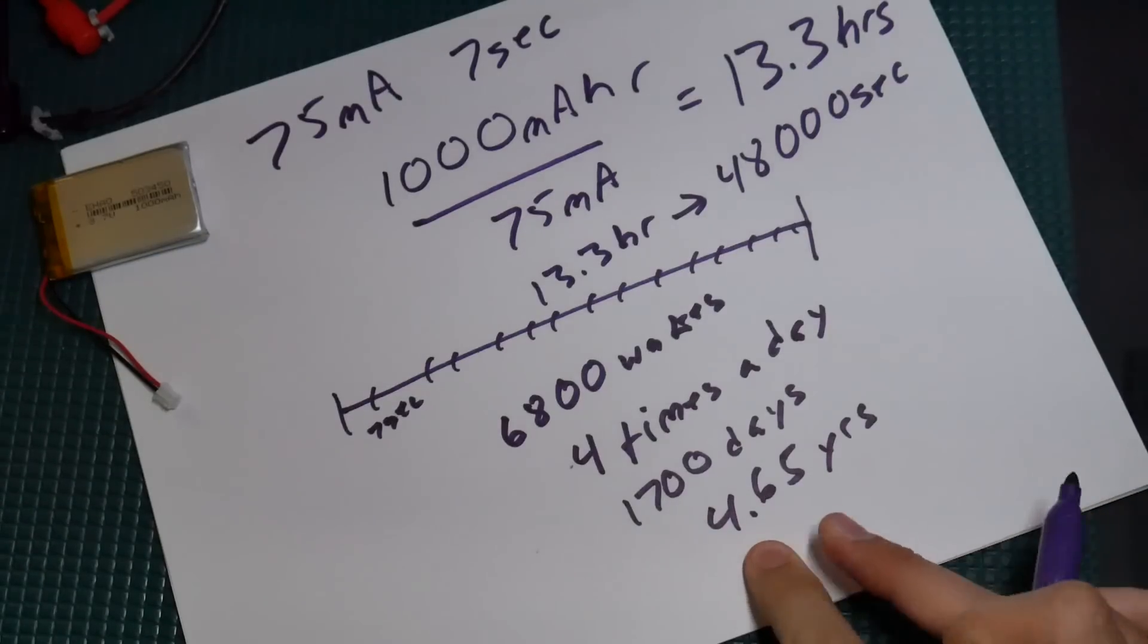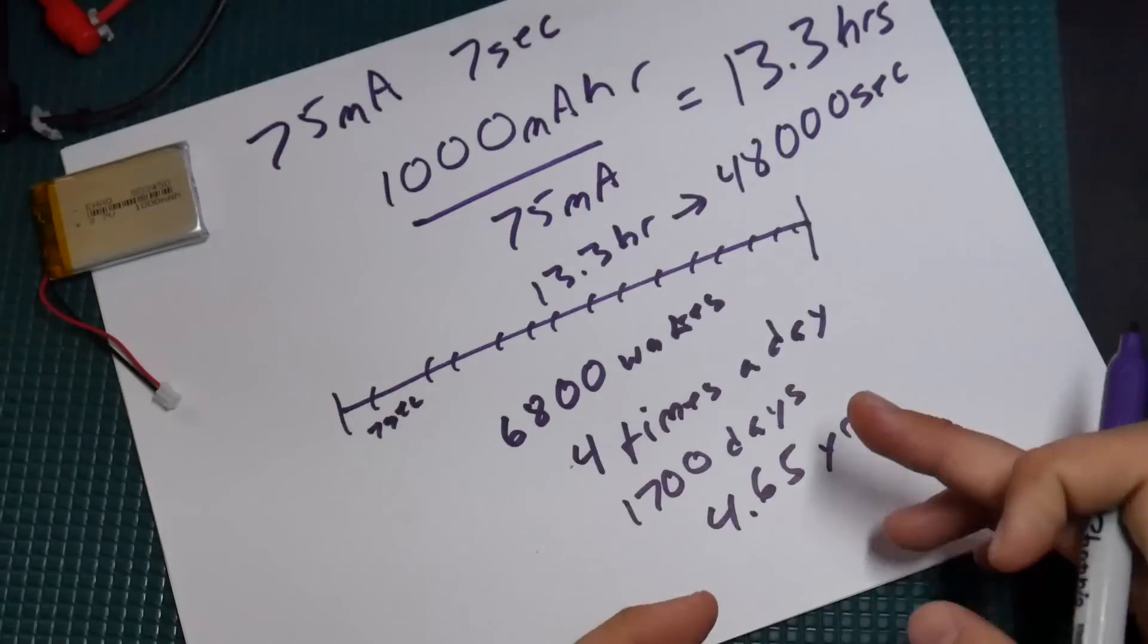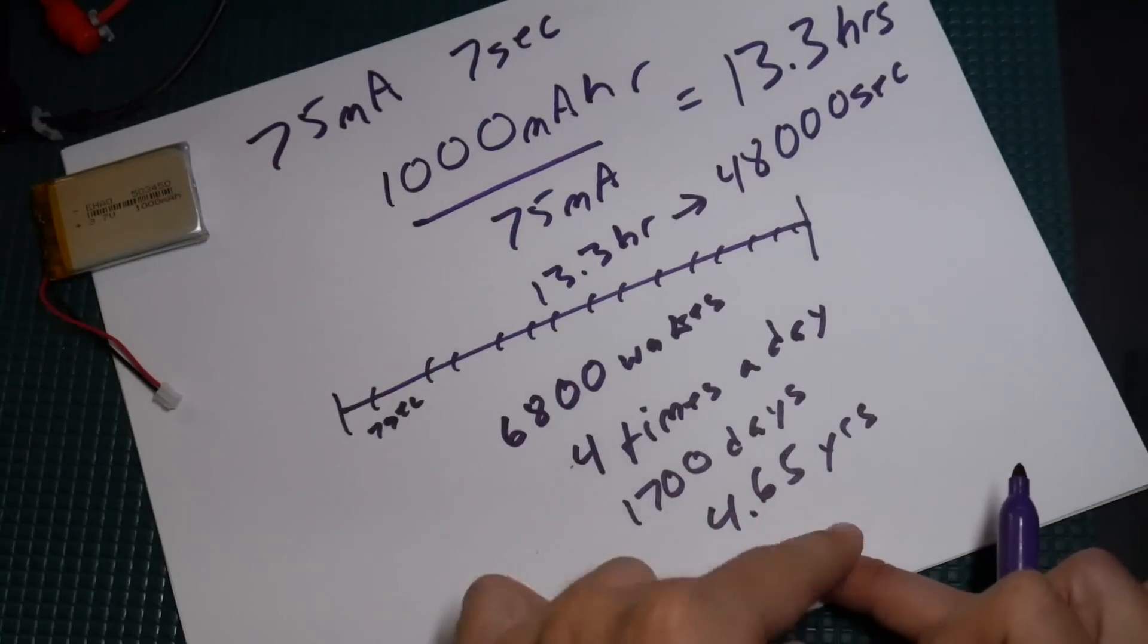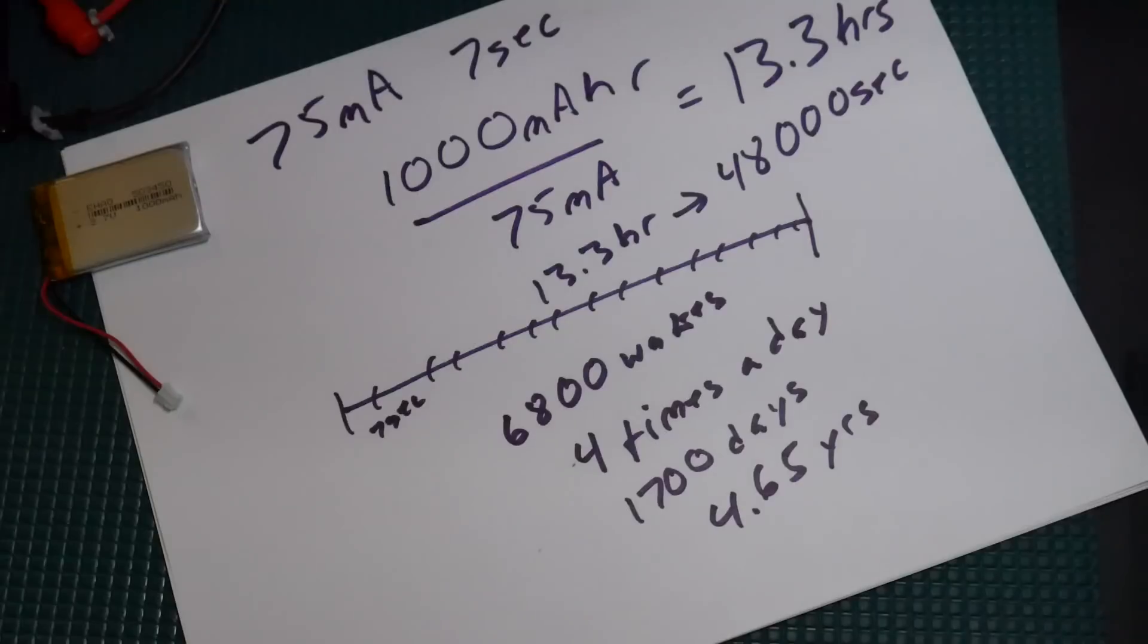You can always work this backwards too to figure out: if I know I want to last for five years, what size battery do I need? So you can always manipulate that to work it whichever way you want.